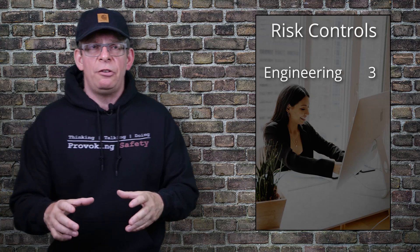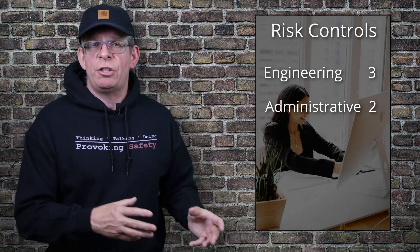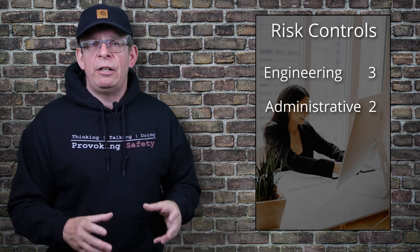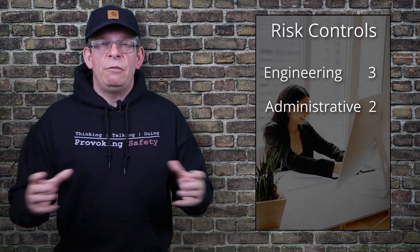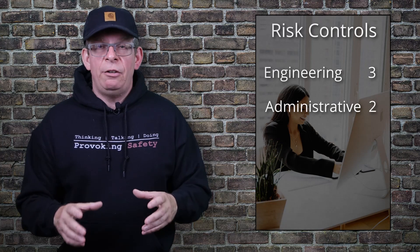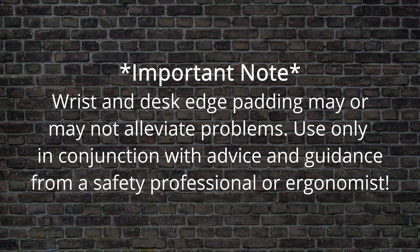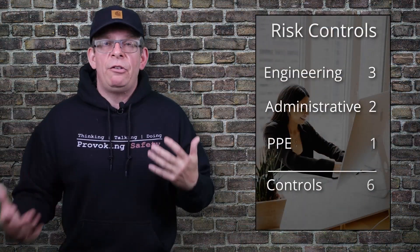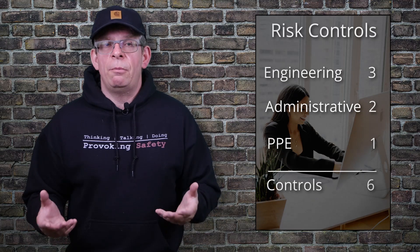Next, we need an administrative control — guidelines describing how the worker will set up her workstation, how to adjust her chair, her desk, and so on. That means written instructions and training to make sure she's able to do it correctly. For PPE — she doesn't need a hard hat or high-vis vest — but we can add padding or guards along any sharp or hard surfaces she may come into contact with. Because these wear out and are adjacent to the worker, we'll consider them PPE for this exercise and give a score of 1.